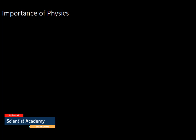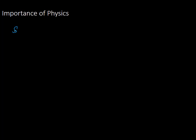Physics is very quantitative. The information physics gives us is quantitative — if you can measure it, you can use it. So in short, physics is basically a science. It is the science of measurement.